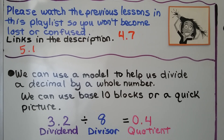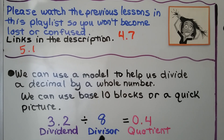We can use a model to help us divide a decimal by a whole number, using base-10 blocks or a quick picture. Remember, the first number is the dividend. It's being divided by the divisor, and it's equal to the quotient.